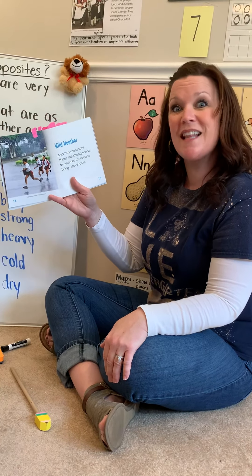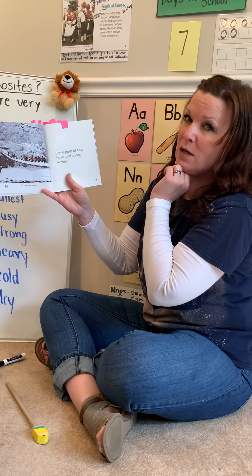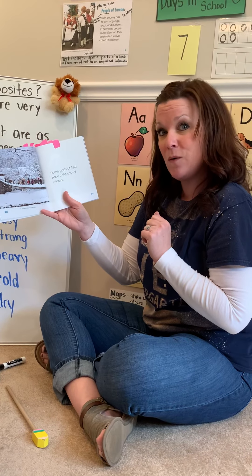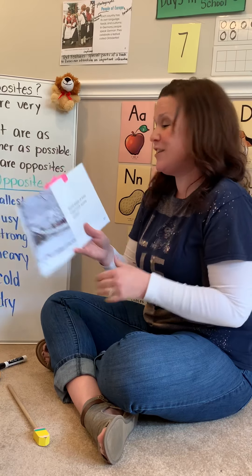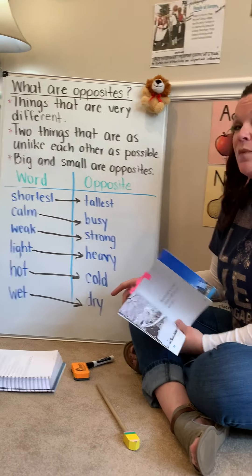We're going to turn to page 16 in the text, and she describes this snowy day in Japan. Some parts of Asia have cold, snowy winters. She uses the adjective cold to describe the winter. What's the opposite of cold? Hot. Hot, cold.